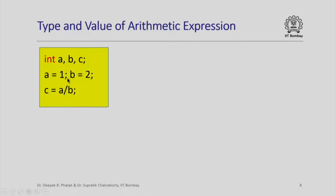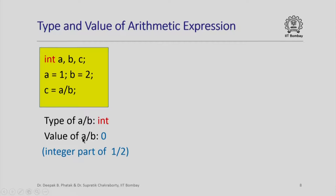Consider this simple C++ code fragment with three integer variables a, b, and c. I have assigned the integer constant 1 to a, the integer constant 2 to b, and assigned the value of a divided by b to c. The type of a/b will be int since both operands are int, so the value computed is an integer value. Since a is 1 and b is 2, the integral part of 1 over 2 is 0, so the value of a/b is 0.